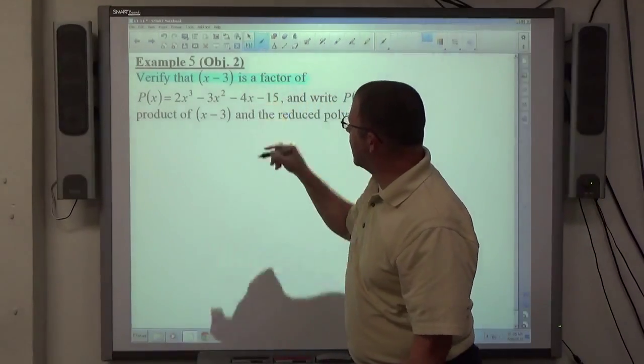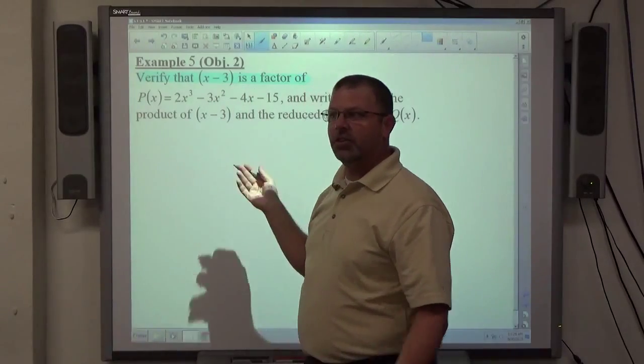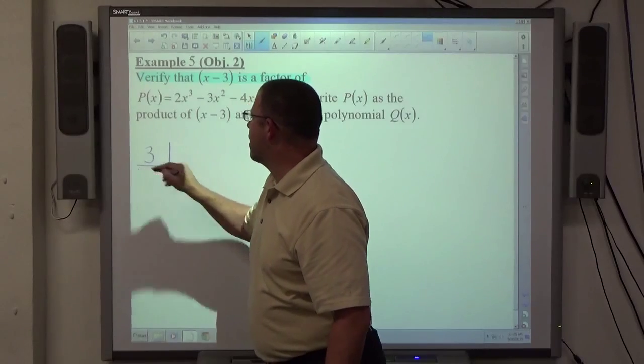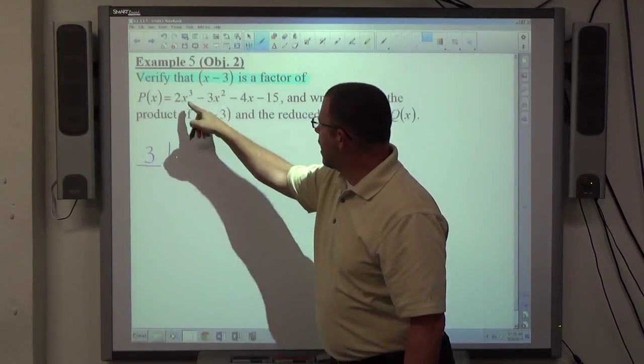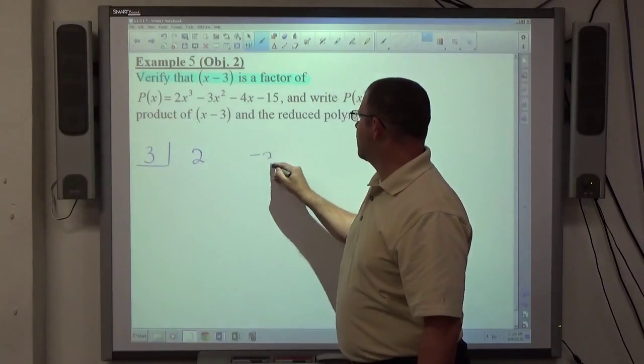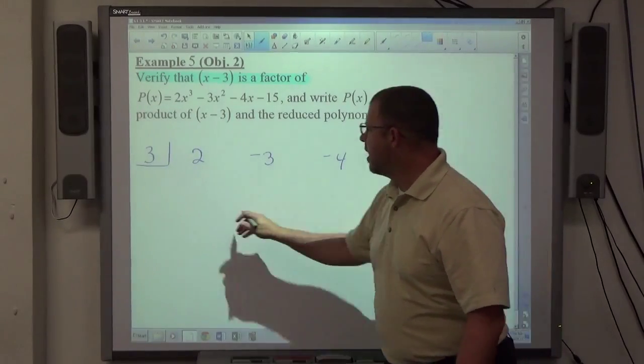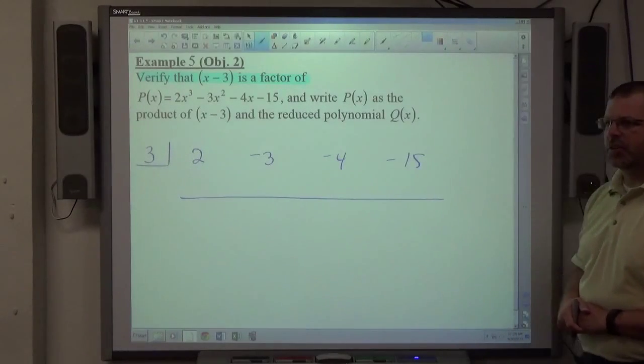If I'm dividing, the verification is basically the synthetic division and getting a remainder of zero. So I'm dividing by x minus 3, so I put a positive 3 in my box. 2x³ - 3x² - 4x - 15 is the polynomial. Every power of x is accounted for, so no zero terms are necessary.